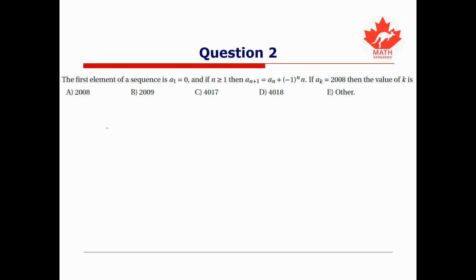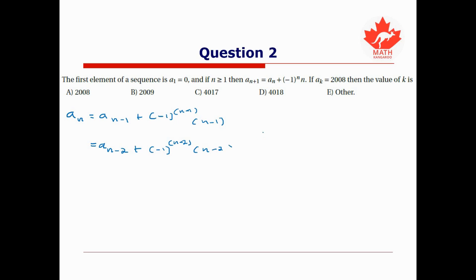I'm going to start expanding this expression to find a pattern. For a term a_n, from the recurrence we get a_n = a_{n−1} + (−1)^(n−1)(n−1). Applying the pattern again to a_{n−1}, we get a_{n−2} + (−1)^(n−2)(n−2), and we keep going. There are two cases depending on whether n is even or odd.